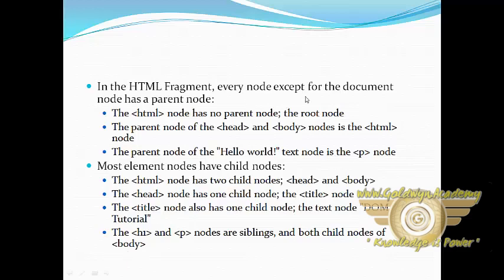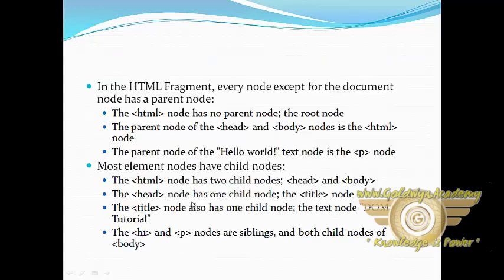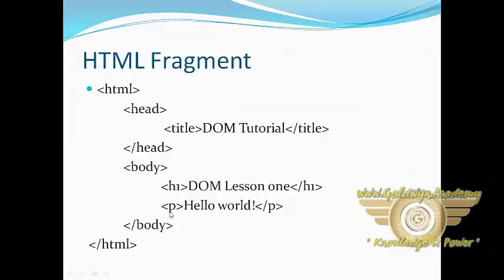In this HTML fragment, every node except the document node has a parent node. The HTML node has no parent — it is the root node. The parent node of the head and body nodes is the HTML node. The parent node of the 'Hello World' text node is the p node. The HTML node has two children: head and body. The head node has one child called the title node. The title node has one child text node: 'DOM tutorial'. The h1 and p nodes are siblings, both child nodes of body, as shown in this fragment.